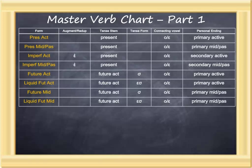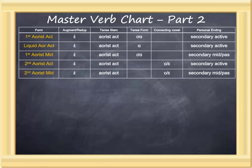Our master verb chart now covers two slides. We have gotten to the point where we're beginning to see some of the nuance that occurs with different combinations of augments, tense stems, tense formatives, connecting vowels, and personal endings. Most recently, we have been working on the aorist forms, which show up on the next slide. In the aorists, we have learned the active and middle forms, both of which are formed on the aorist active stem.